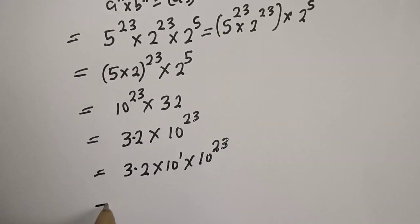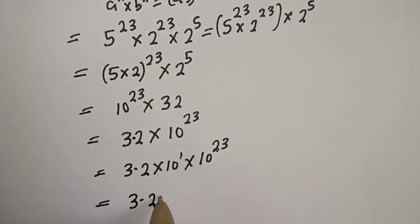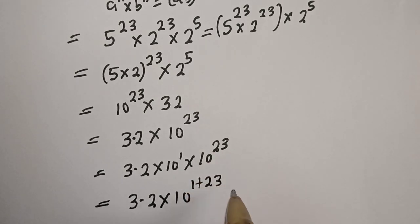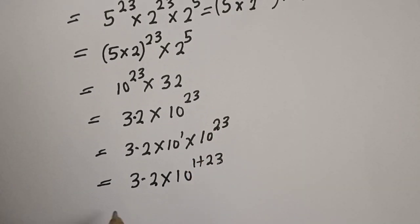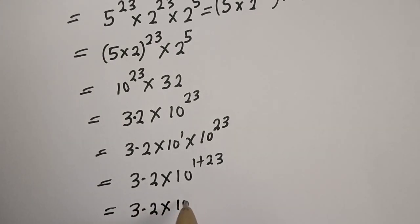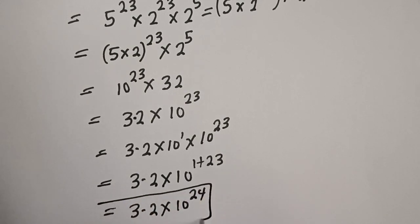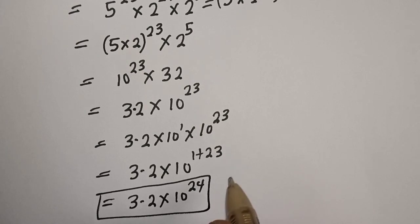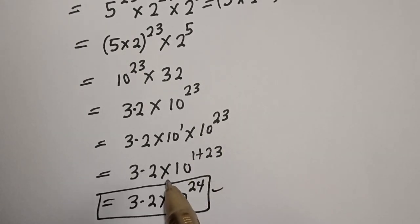3.2 multiplied by 10 raised to power 1 plus 23, equal to 3.2 multiplied by 10 raised to power 24. This is the final answer. If you enjoyed the class, please don't forget to like, share, comment and subscribe. Thank you.